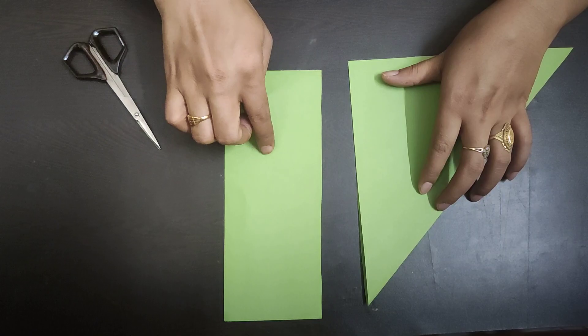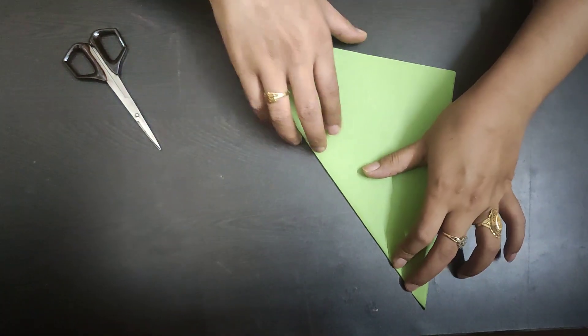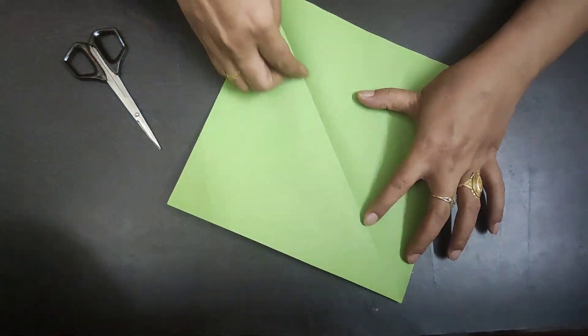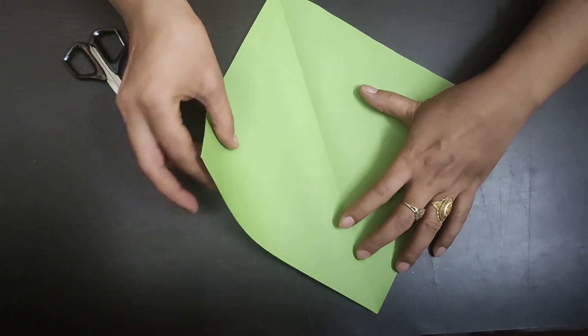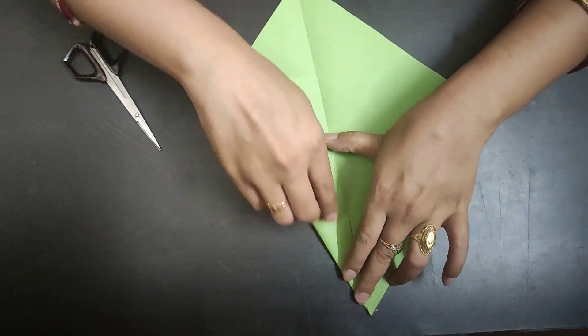Now keep this extra sheet for further use. Take this triangle and open it. You have seen this line of symmetry. Now make two equal size triangles along this line.